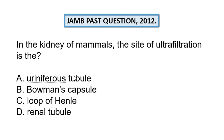Selective reabsorption and renal secretion occur in the uriniferous tubules, also known as the renal tubules, and the loop of Henle which is a part of the renal tubule. So all of these occur in options A, C, and D, whereas ultra filtration occurs only in Bowman's capsule. I believe that does justice to the question — thank you for watching and God bless you.